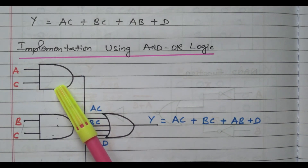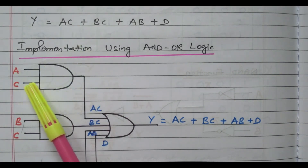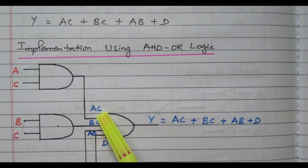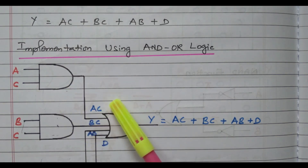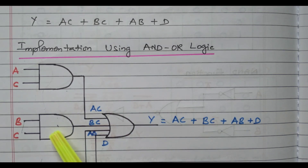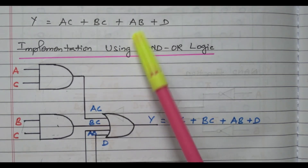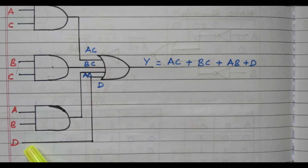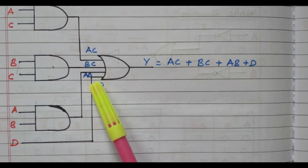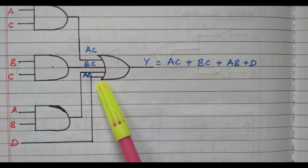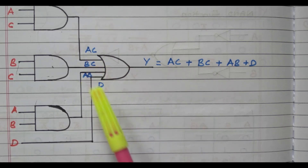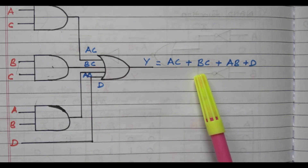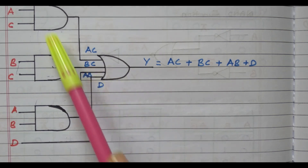Now we will see the diagram. One AND gate is available to implement A times C; the input is A and C, so the output will be AC. One more AND gate with inputs B and C gives output BC. Another AND gate with inputs A and B gives output AB. One more input is D. We need to add all these values, so we have one OR gate. The OR gate adds all the parameters: AC plus BC plus AB plus D. So we got the required output using three AND gates and one OR gate.